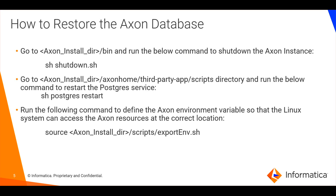To restore the database, we need to shut down the Axon services using the shutdown command first. Once the shutdown is complete, we need to start the Postgres service using the below command. To define the Axon environment variable so that the Linux system can access the Axon resources at the correct location, we need to source exportenv.sh.